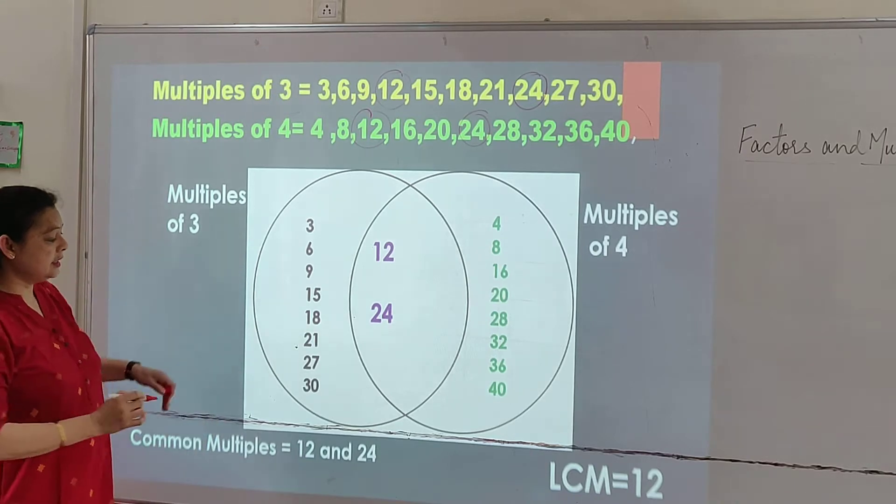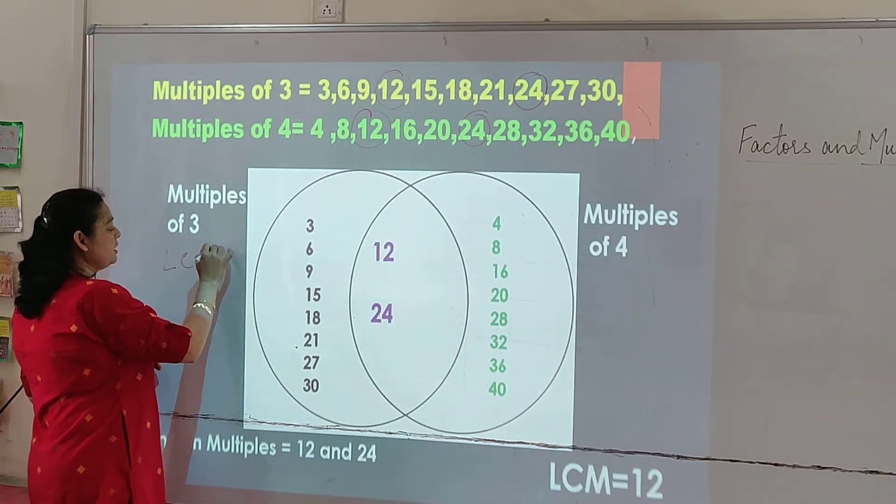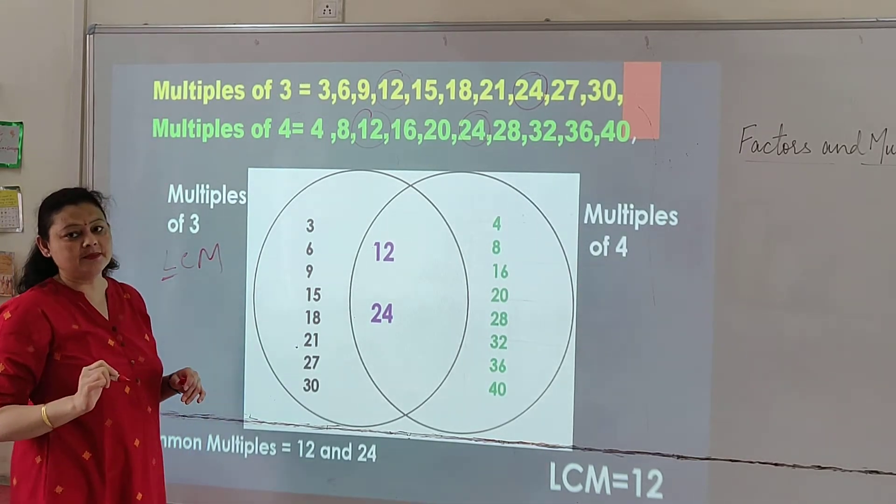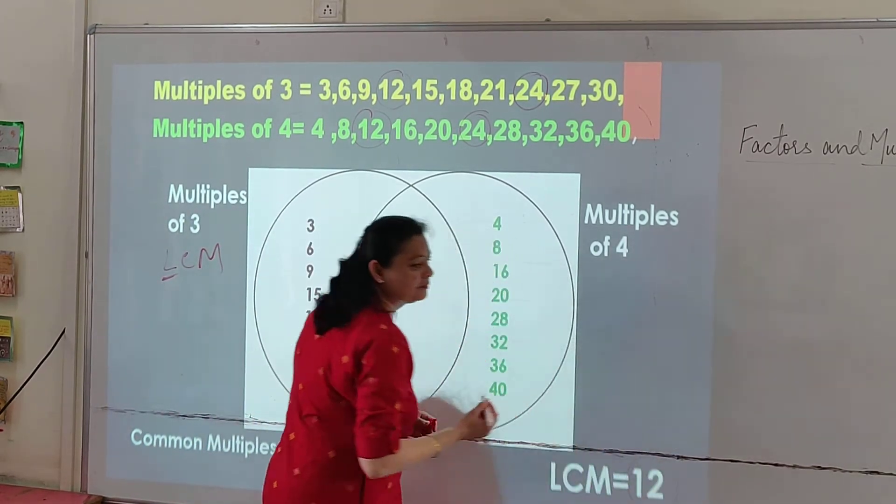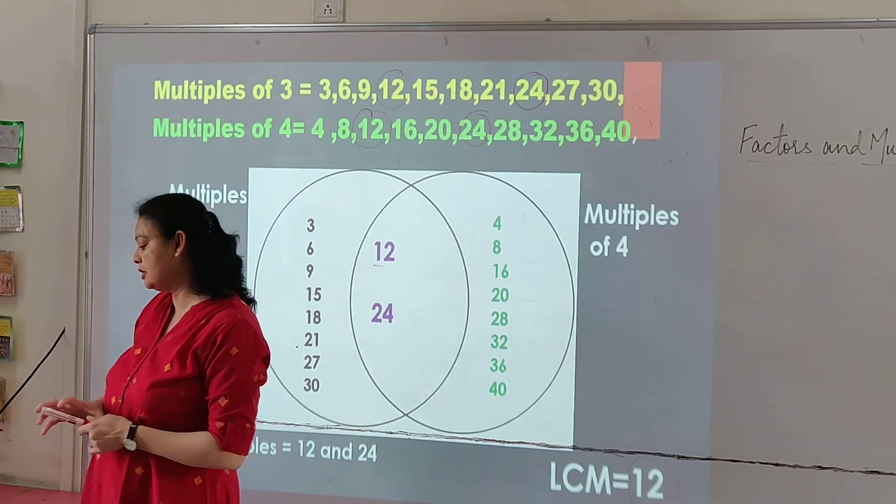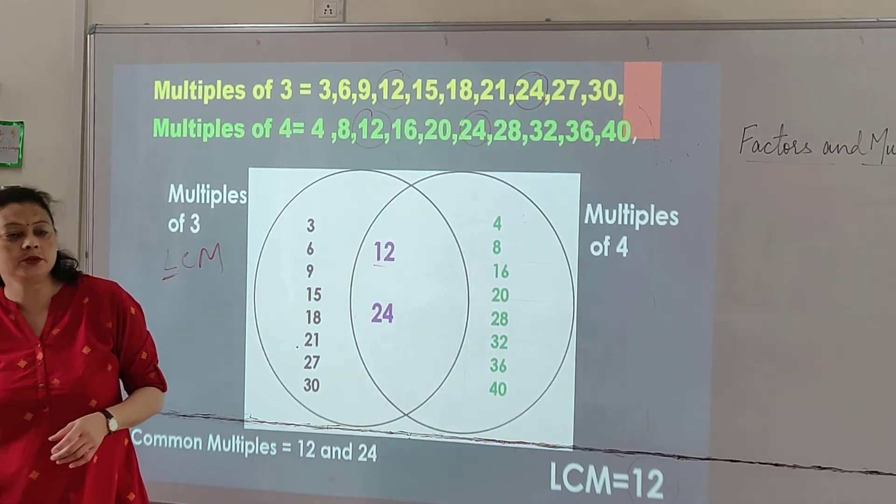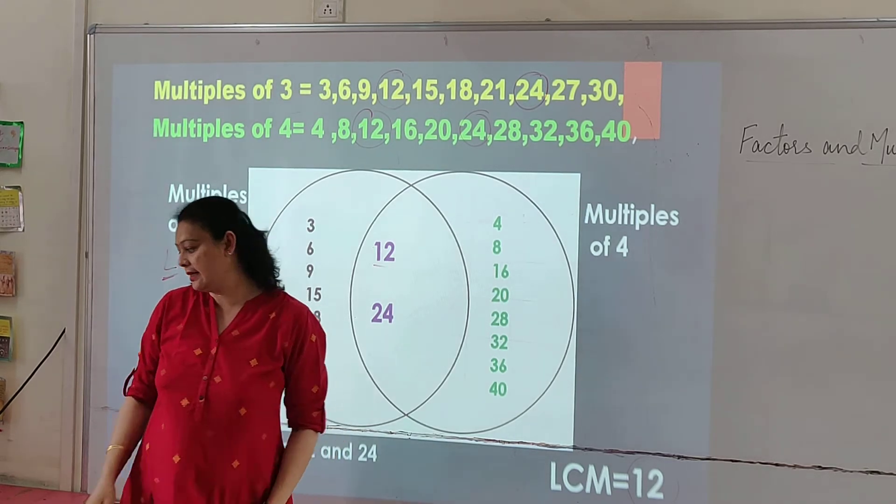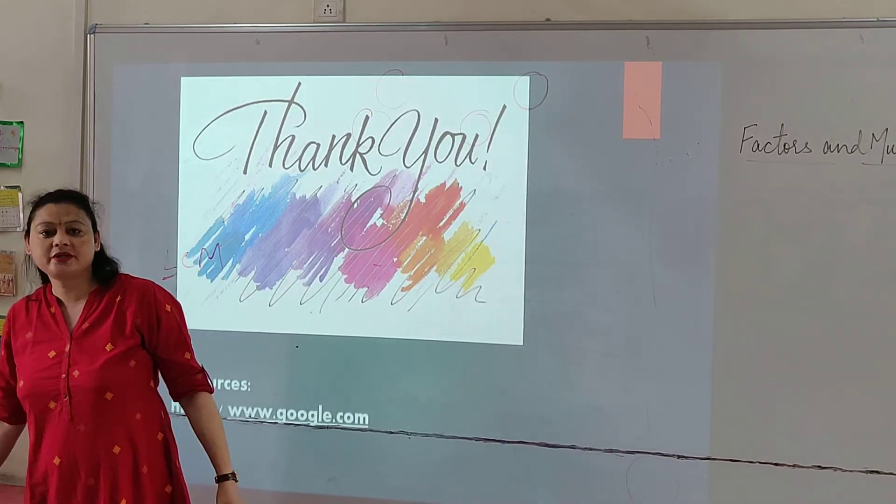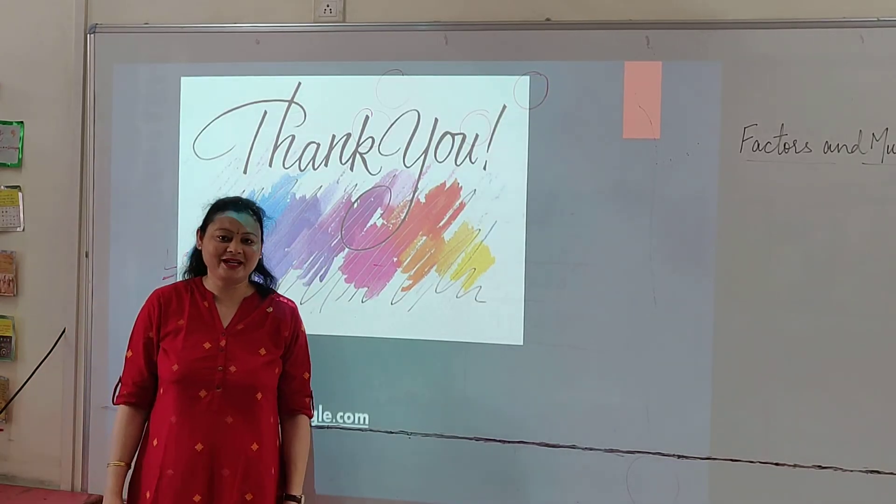Now our question is to find out the LCM. So what are we going to do? Least. Which is the least number of 12 and 24? 12. So LCM will be 12. So I hope you now understood how to find out LCM by both the methods, division method and Venn diagram. I hope you understood everything children. Thank you and have a nice day.